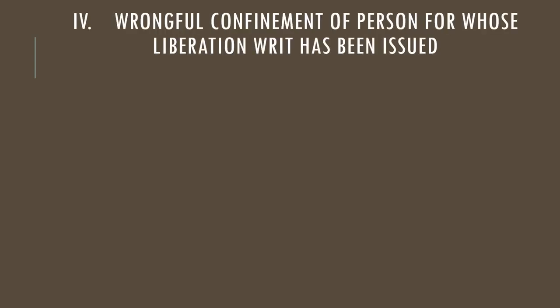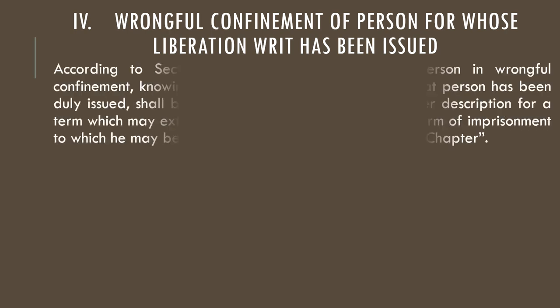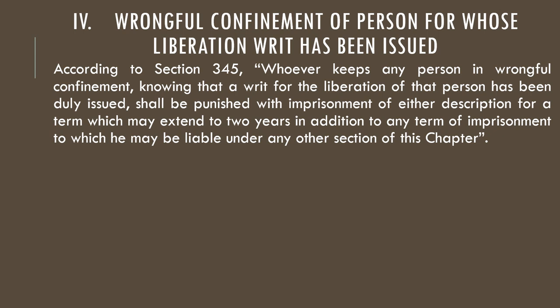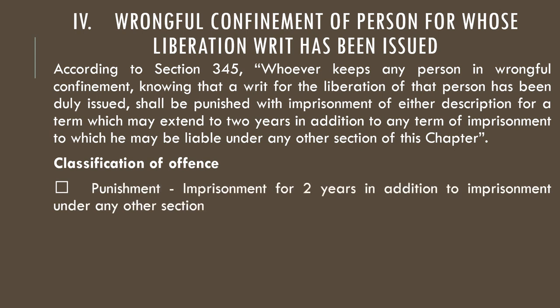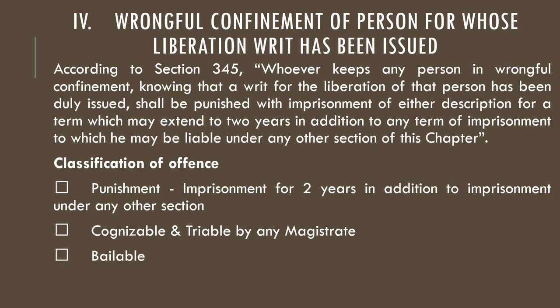The fourth category is wrongful confinement of a person for whose liberation a writ has been issued. According to Section 345, whoever keeps any person in wrongful confinement knowing that a writ for the liberation of that person has been duly issued shall be punished with imprisonment of either description for a term which may extend to two years, in addition to any term of imprisonment to which he may be liable under any other section of this chapter. The classifications are: imprisonment for two years in addition to imprisonment under any other section; cognizable and triable by any magistrate; bailable; and non-compoundable.